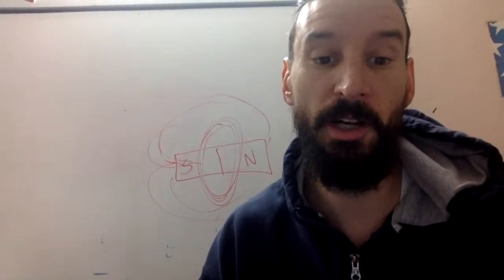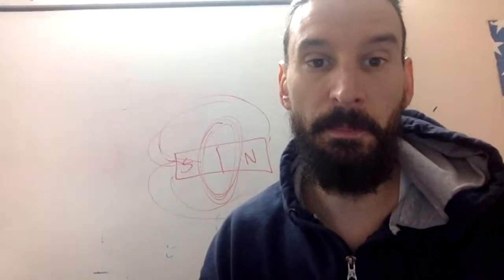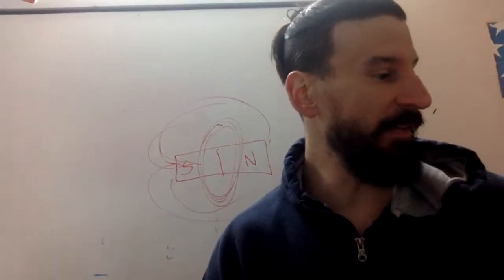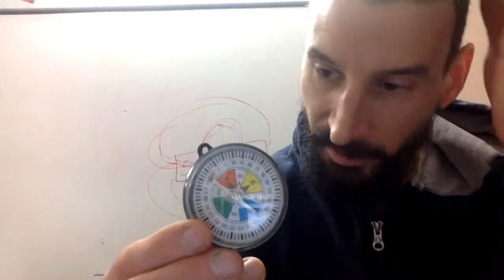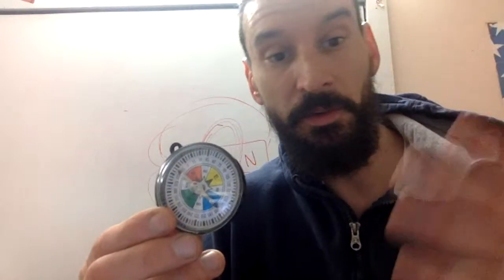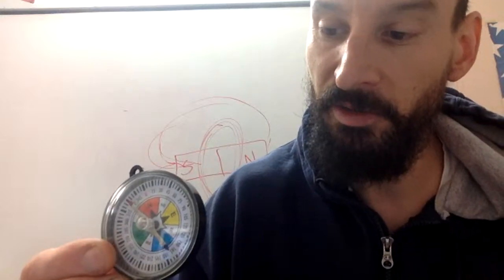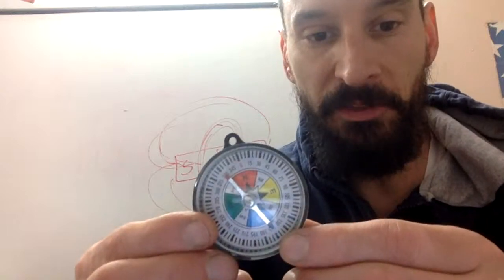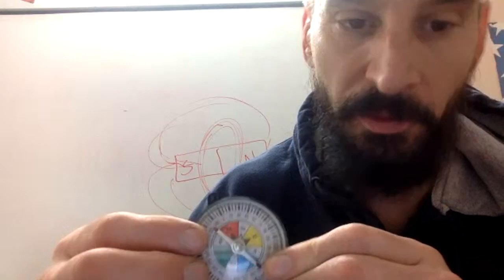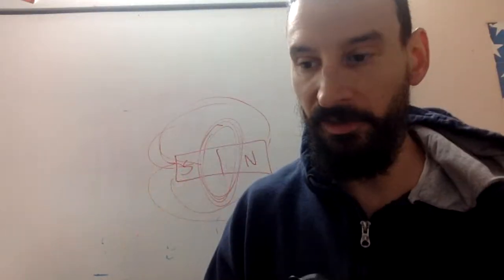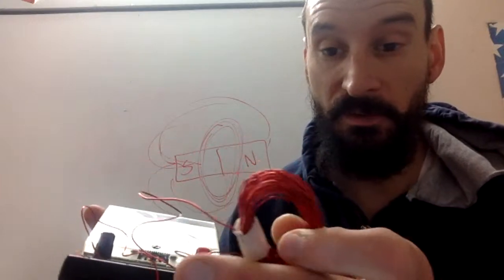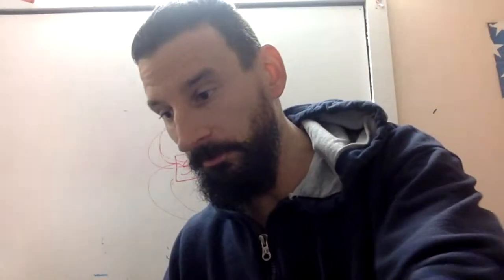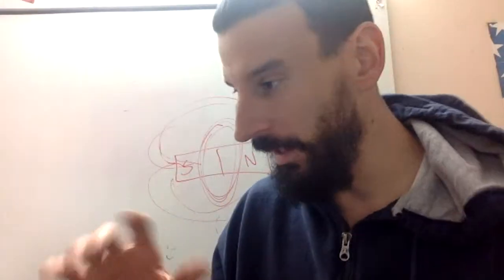That's what station one is all about — the fact that we can take a magnet and create electricity with it by alternating the magnetic field. Station two is the compass and wire, which is a way to investigate this. A compass has a needle with a little magnet inside that lines up with the magnetic poles of the Earth.